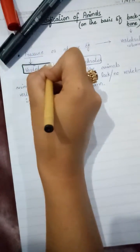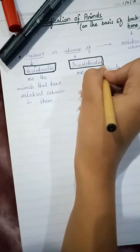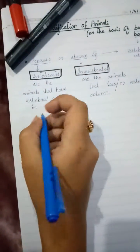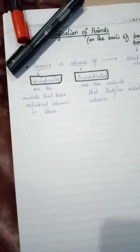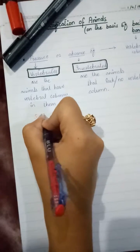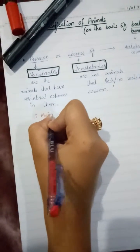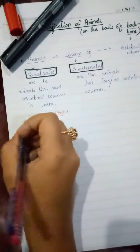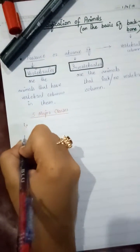Now we discuss about the classes of vertebrates and invertebrates. Vertebrates have five major classes. How many classes? Vertebrates have five major classes. They are named as: